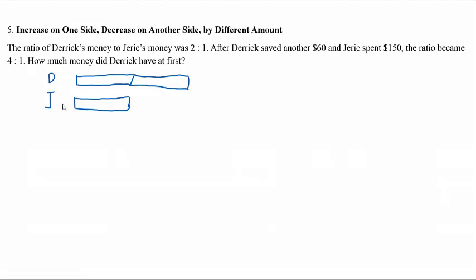The final scenario for this ratio is when you have an increase on one side while a decrease on another side by a different amount. That means one side of the ratio increases while the other side decreases and the amounts are both different. So how do we tackle this type of question?